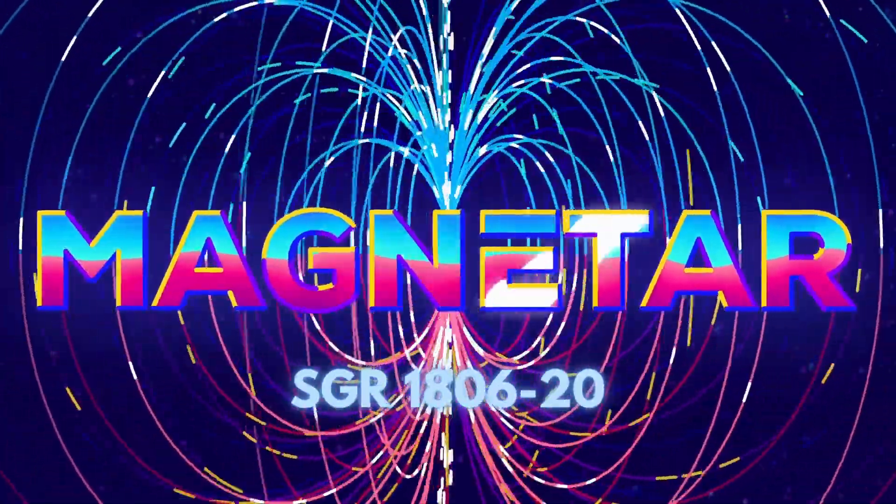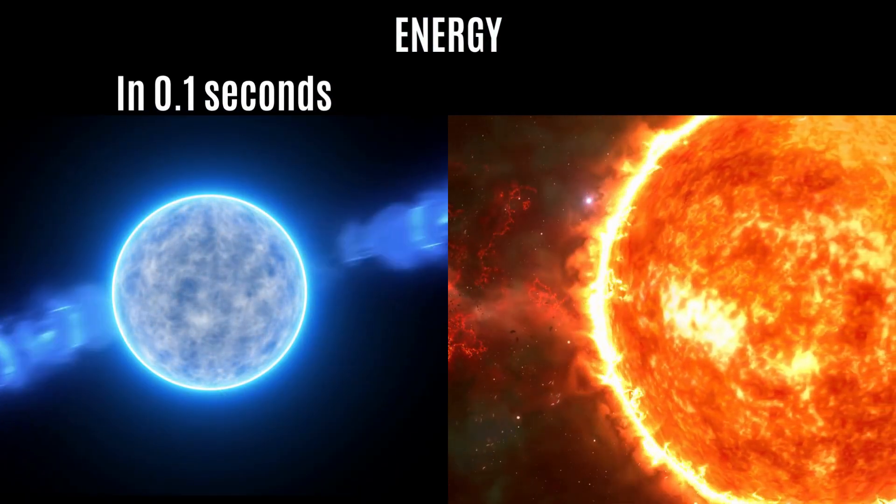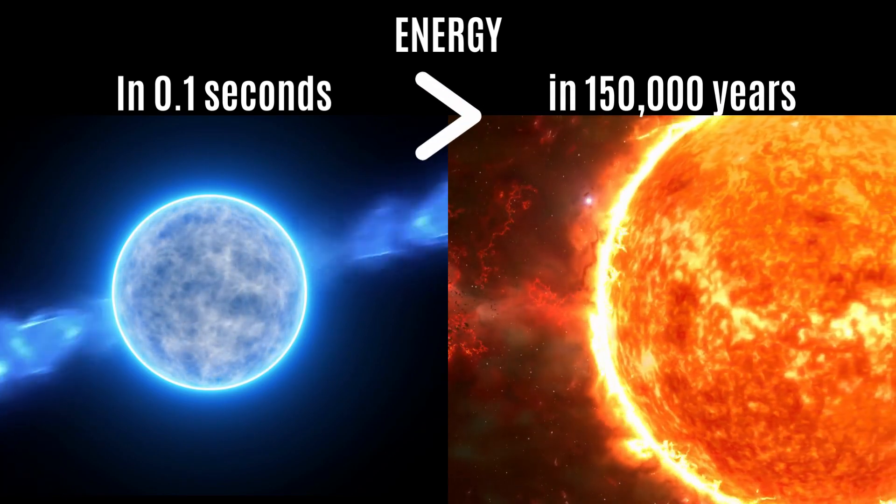The cause was a starquake on the Magnetar SGR 1806-20. It released more energy in 0.1 seconds than the Sun does in 150,000 years. Despite the distance of 50,000 light-years, the gamma rays briefly expanded Earth's ionosphere.